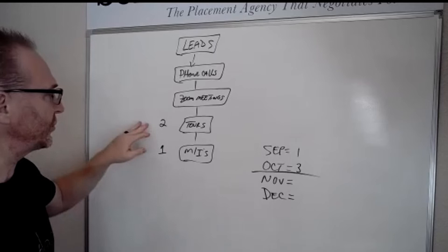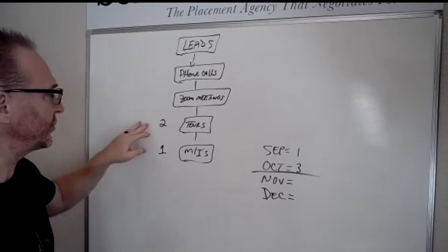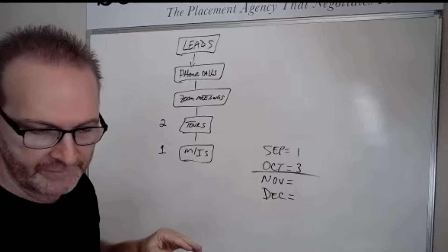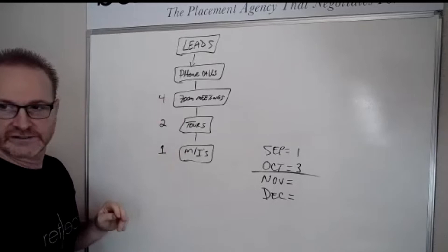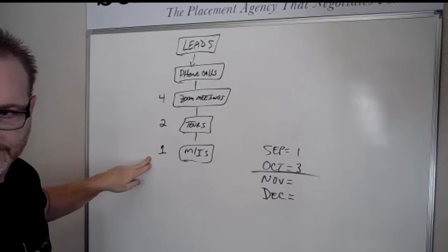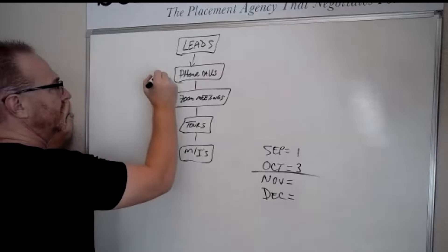It's typically going to take two tours. Typically. Now, could you score both tours into both? Absolutely. But typically, especially early on, to get two tours, you're going to need four Zoom meetings to get two tours to one move-in. To get four Zoom meetings, typically, is six phone calls.